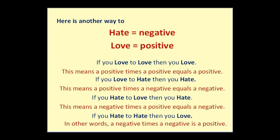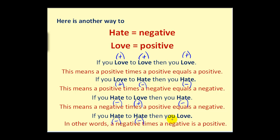We'll end with a poem to remember the rules for multiplying and dividing integers. The word 'hate' represents a negative number and 'love' represents a positive number. If you love to love — positive times positive — then you love, so the product or quotient is positive. If you love to hate — positive and negative — then you hate, so the result is negative. If you hate to love — negative and positive — the result is also negative. And if you hate to hate — negative times negative — then you love, so you get a positive.